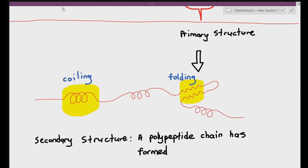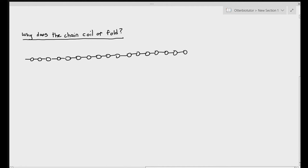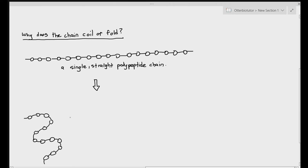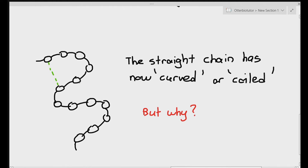The secondary structure of proteins is basically described as a polypeptide chain that has formed coils or folds within itself. But why does it start to form coils or folds? If we imagine a single straight polypeptide chain — that's the primary structure — that same chain has now started to curve or coil. We start noticing bonds appearing between amino acids that were far away from each other. Amino acids not linked close together start to form hydrogen bonds, which I've represented as dotted lines.